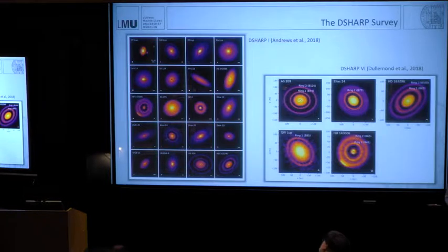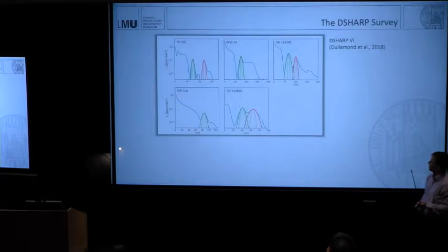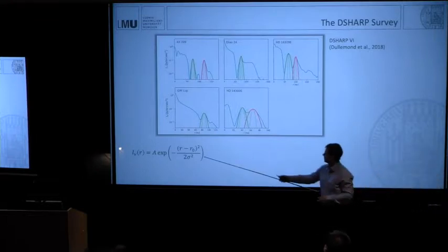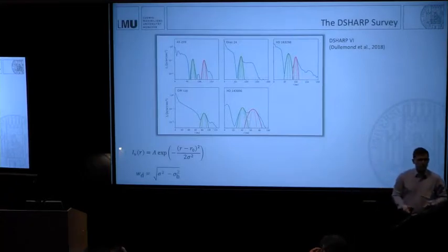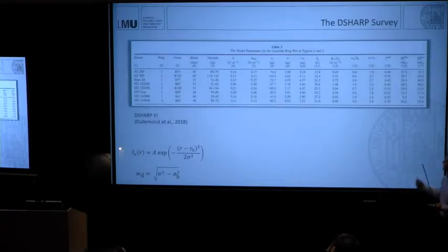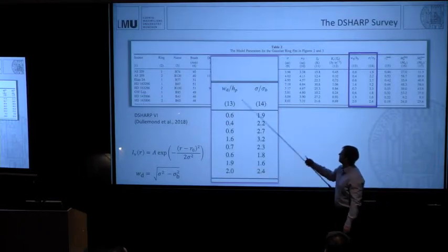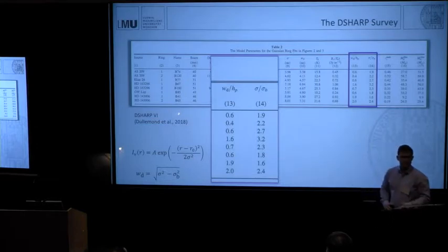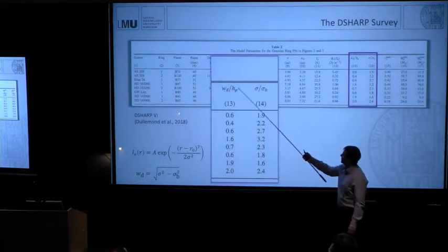In case DSHARP paper, they looked into eight of these dust rings in closer detail. They summarized the results. Basically what they did is they were fitting Gaussian profiles to the intensity. So they could get the width of these Gaussians. And with some convolutional theorem, you could go back to what is the width of the dust rings. They summarized that in this nice table. I just wanted to highlight these two columns.